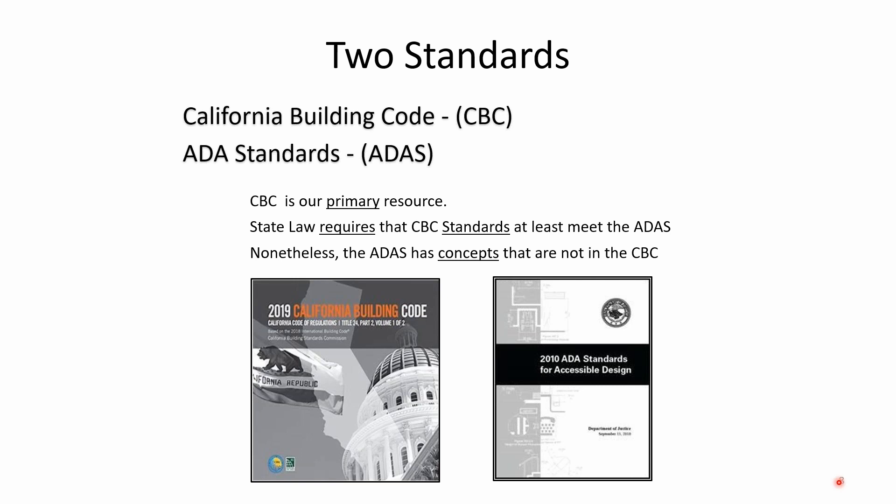There are two standards for accessibility in California. The primary resource is the California Building Code, which we're discussing today. There is also the ADA standards. State law requires that CBC standards at least meet the ADA minimum level. Some California requirements are even more strict. The ADA has concepts not in the CBC, so it also remains a good reference material.